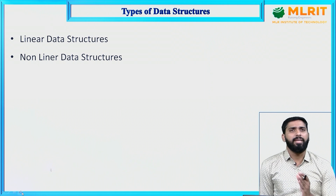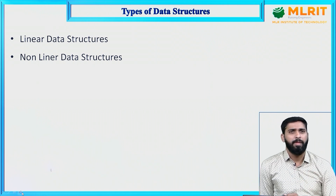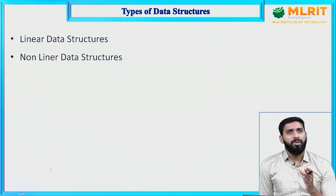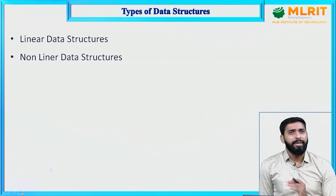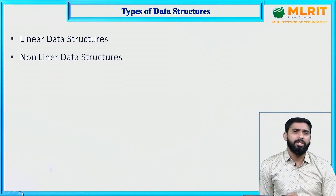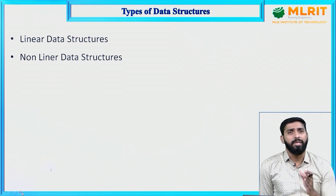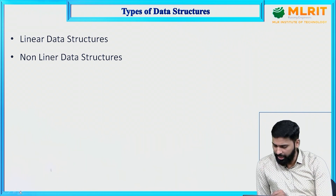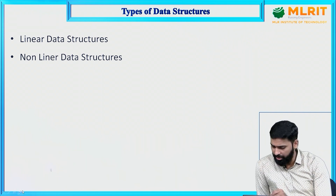Linear means sequential data structures — the data is stored in a sequential manner. For example, an array is a linear data structure. In a non-linear data structure, we store data elements in a hierarchical manner. Let us discuss in detail.